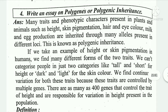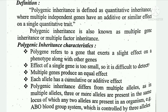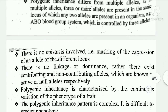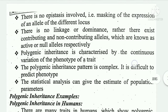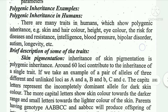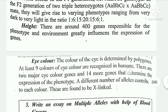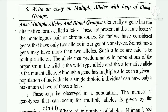Fourth important question: write an essay on polygenic or polygenic inheritance. This covers the definition of polygenic inheritance and its characteristics. Short questions like 'write the characteristics of polygenic inheritance' can also be answered from this. Examples of polygenic inheritance in humans include skin pigmentation, height, and eye color.